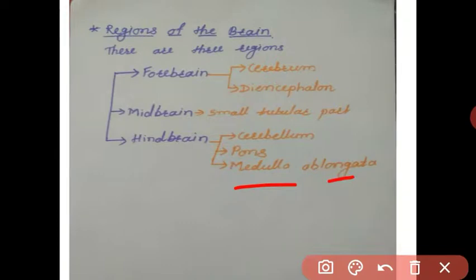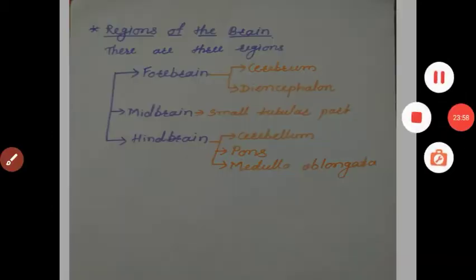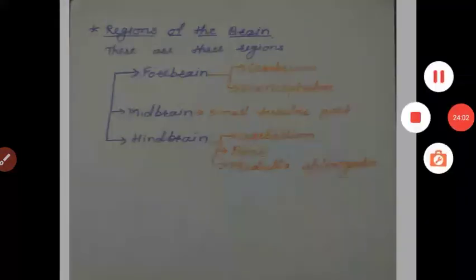The medulla oblongata is the lowest part of the brain and is also called the brain stem. Its main function is to control all involuntary activities such as breathing, heartbeat, respiration, digestion, and peristaltic movement of the alimentary canal. In the next video, we will study about the spinal cord to complete the central nervous system. Thank you.